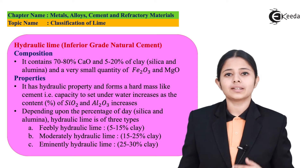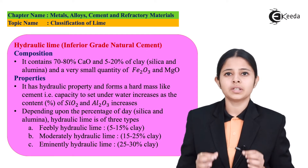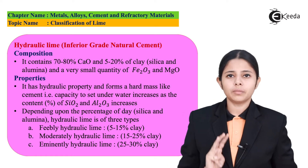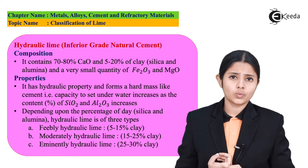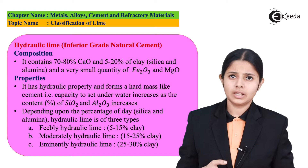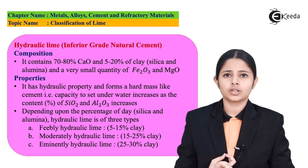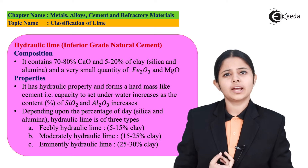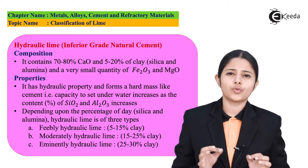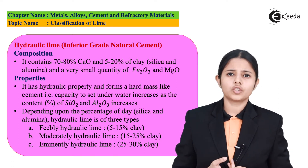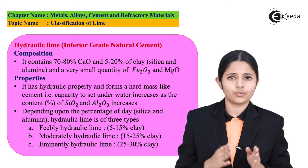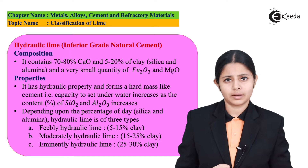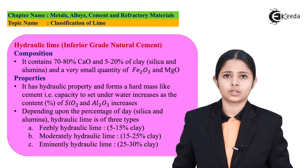Depending on the different percentages of clay, hydraulic lime is divided into three forms. The first is feebly hydraulic lime, which consists of 5–15% of clay. The second is moderately hydraulic lime, which consists of 15–25% of clay. The third is eminently hydraulic lime, which consists of 25–30% of clay.